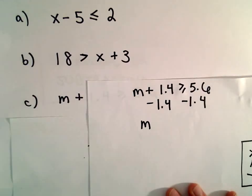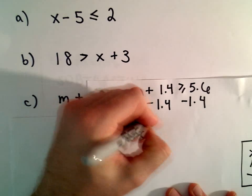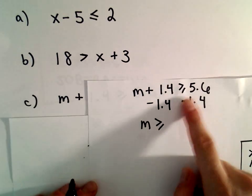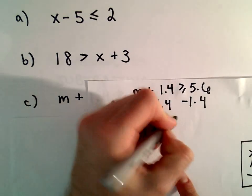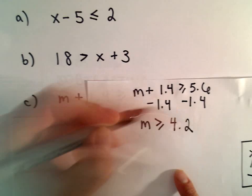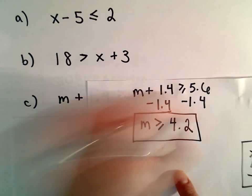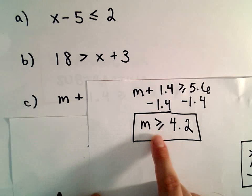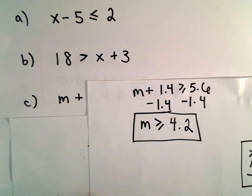We'll be left with m on the left side, our greater than or equal to sign. 5.6 minus 1.4 is going to give us 4.2. So our solution will be any number m that's greater than or equal to 4.2.